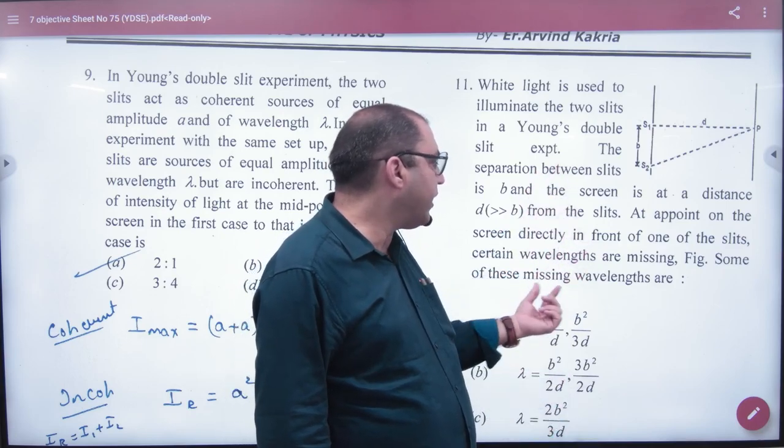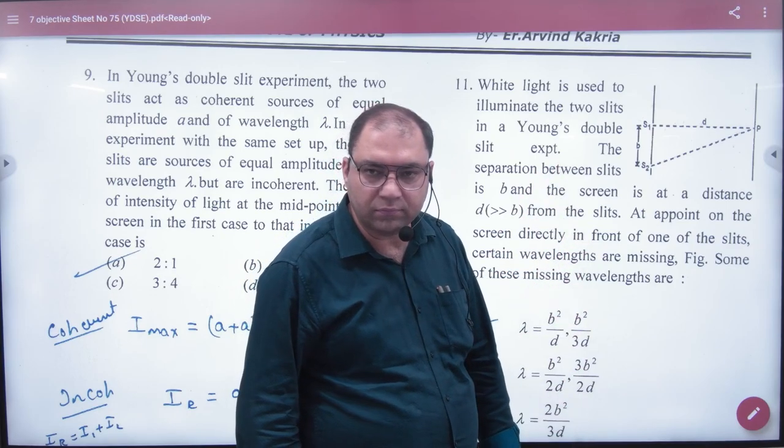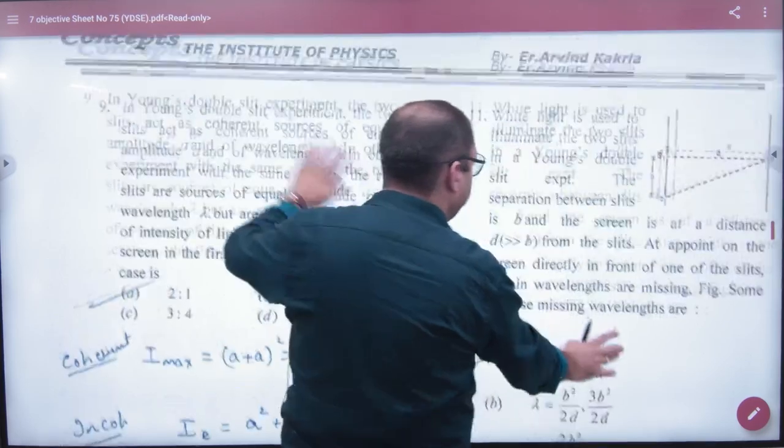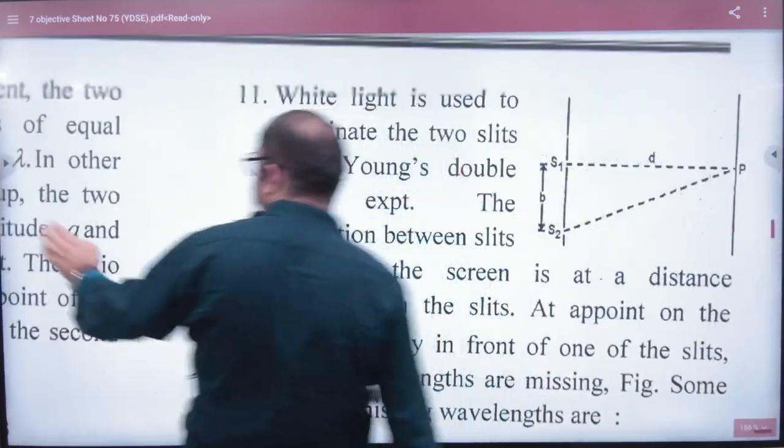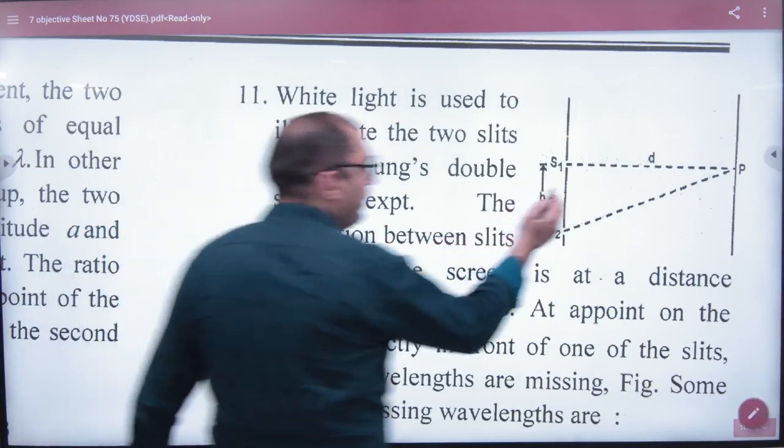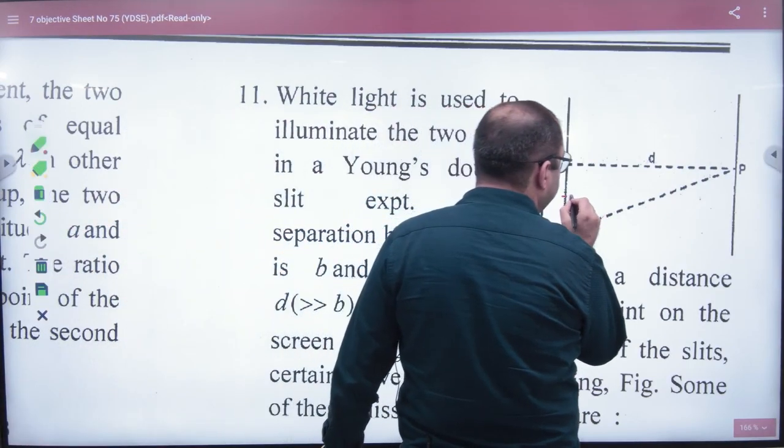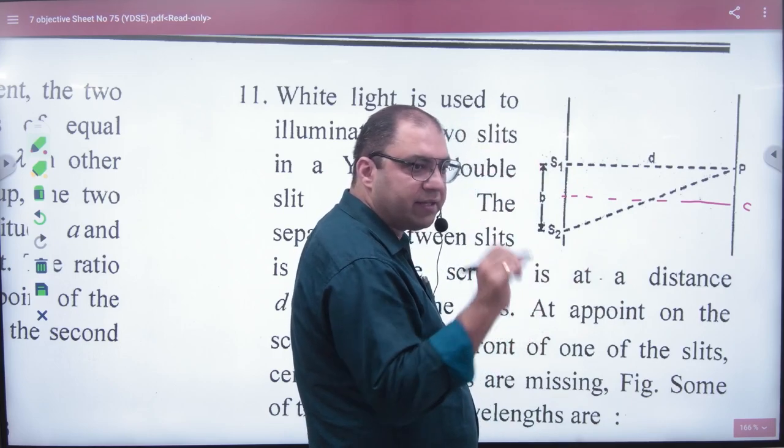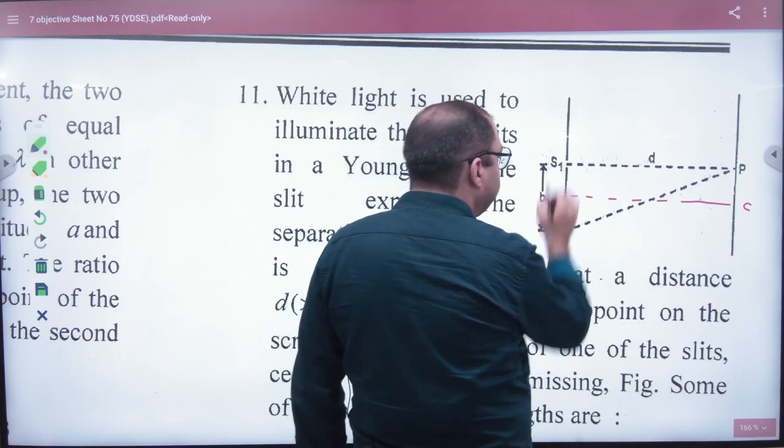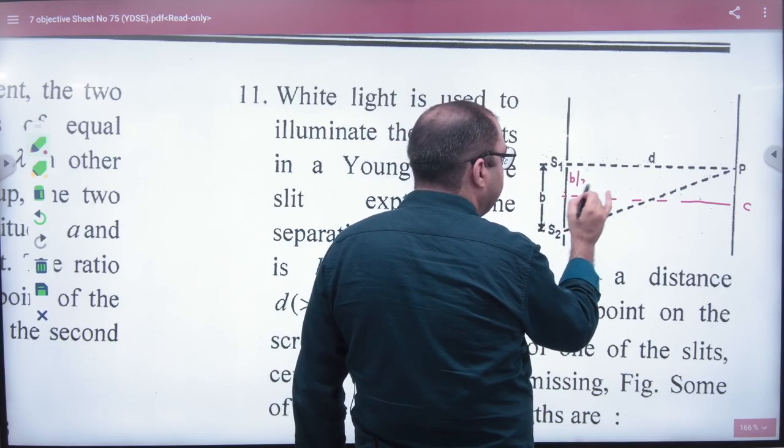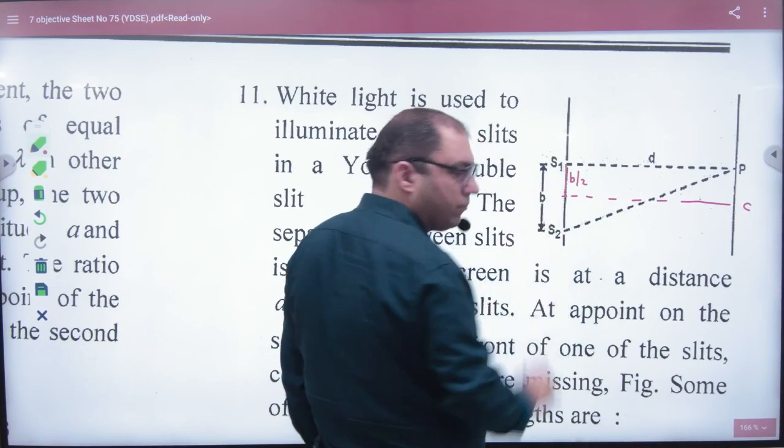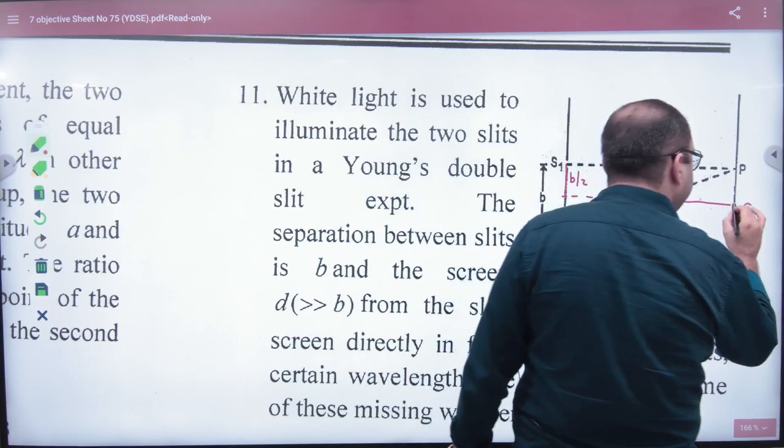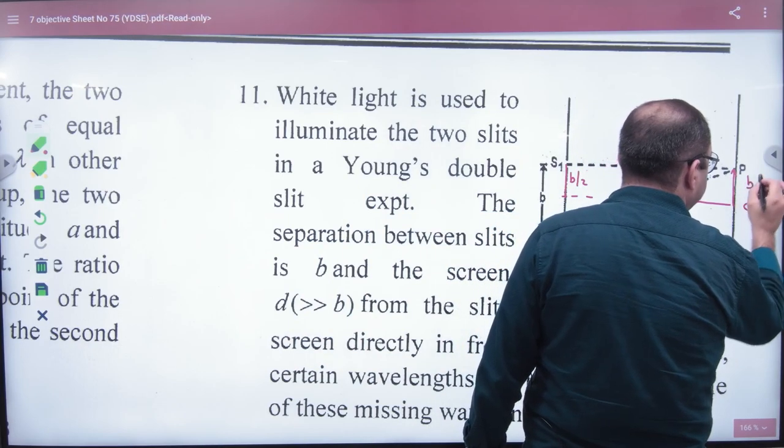So here it is a minimum point. So what is the lambda? First of all, let's discuss this diagram. In actual, this is the center. The center will be here. We take all distances from the center. If this distance is b, what is half distance from here? b/2. That is, what is the P point from the center? b/2.